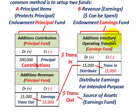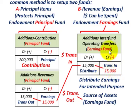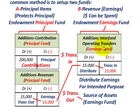Those earnings have to be transferred out into the revenue or earnings fund. In the earnings fund, you'd have additions to inter-fund operating transfers. Credit the revenue account — additions to revenues — for $15,000 for the transfer out, and debit the earnings fund for $15,000 as a transfer in. Now what's sitting in your earnings fund can be distributed for the intended purpose. The principal amount is really the source of assets for the earnings fund.